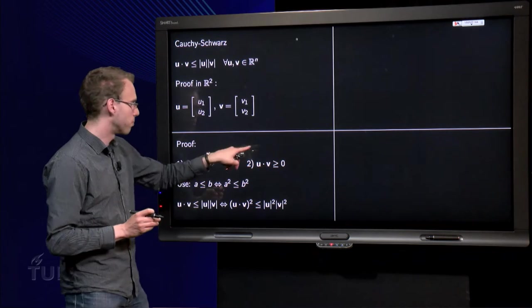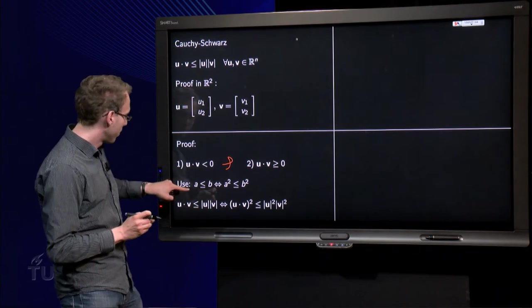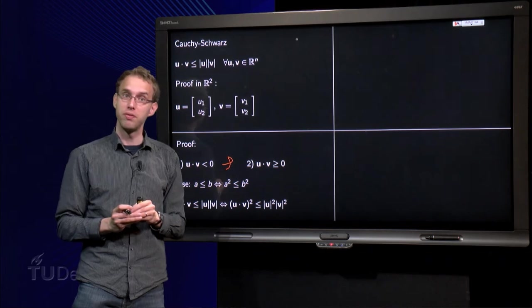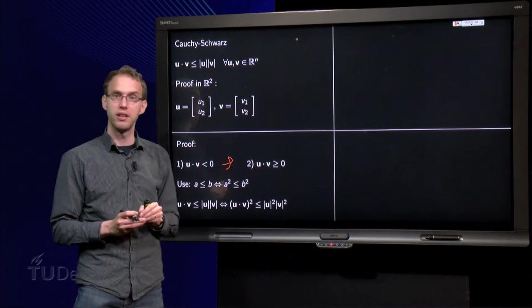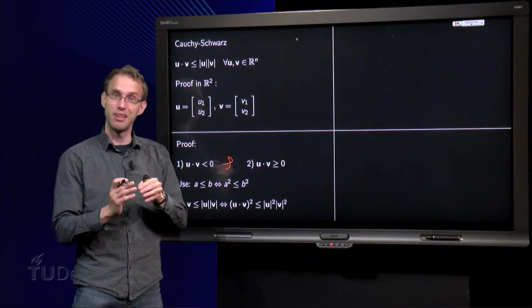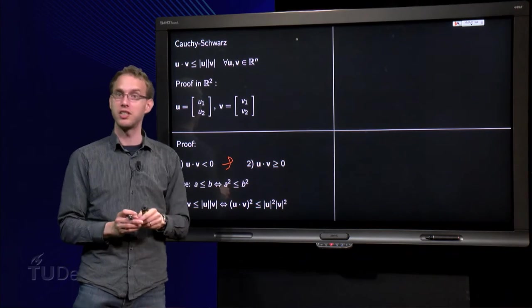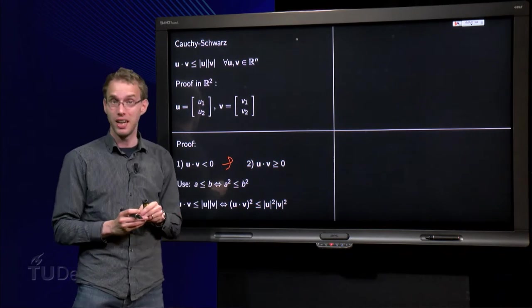So, that is why we need this positivity here. So, if the inner product u·v is smaller or equal than the length of u length of v, that is equivalent to proving that the squares satisfy the same inequality.